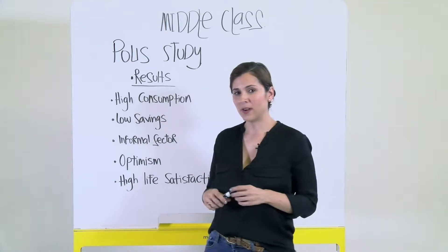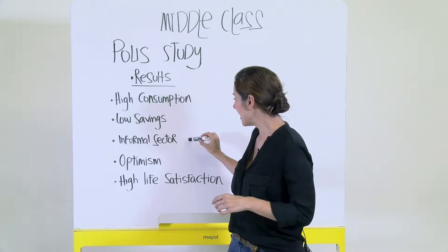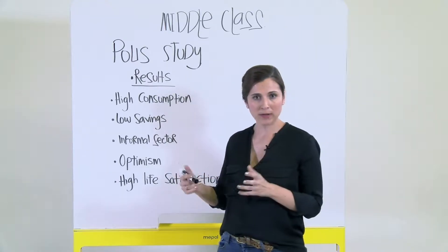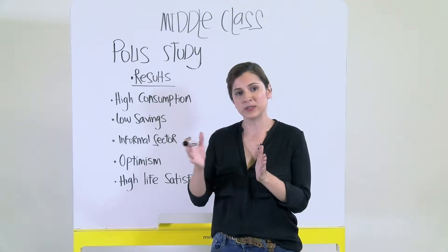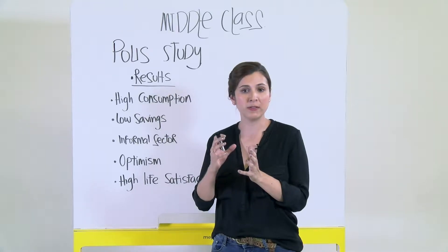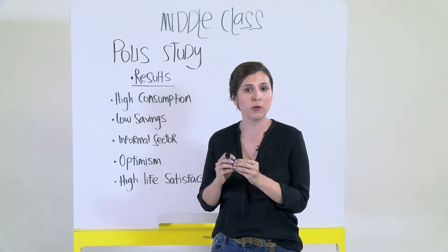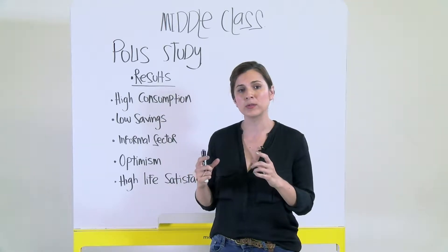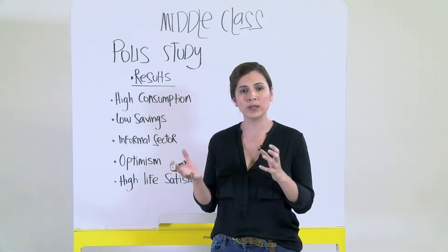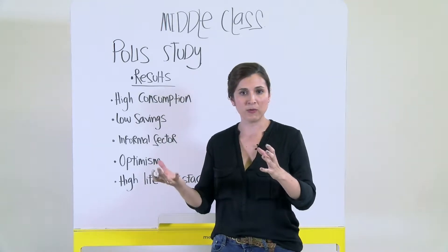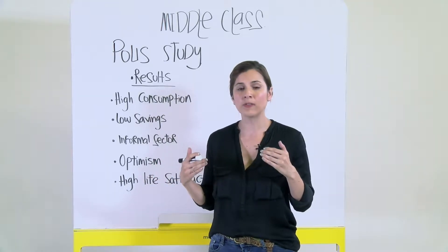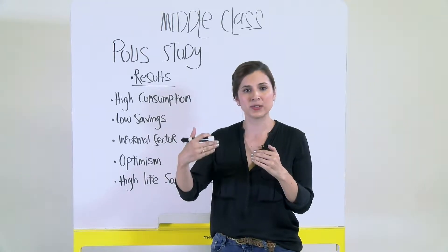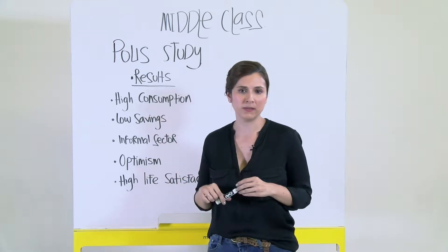Another characteristic we found of the middle class is the high percentage of people who work in the formal sector. One of the expected findings is that as people increase their income, they will be more in the formal sector. However, we found in Cali and in general in Colombia that people in the middle classes are equally distributed in the formal and informal sectors. So increases in education or income are not necessarily related to more employment in the formal sector.